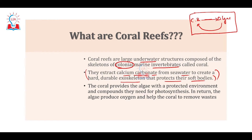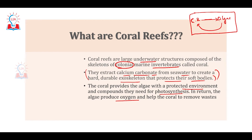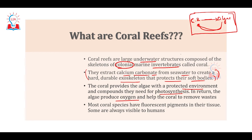The coral polyp provides algae with a protected environment — the hard shells made from calcium carbonate provide protection to the algae. In return, algae provides oxygen to the coral polyp. This symbiotic relationship between the coral polyp and algae gives rise to coral reefs, and most of these coral reefs have fluorescent pigments which make them look very attractive.